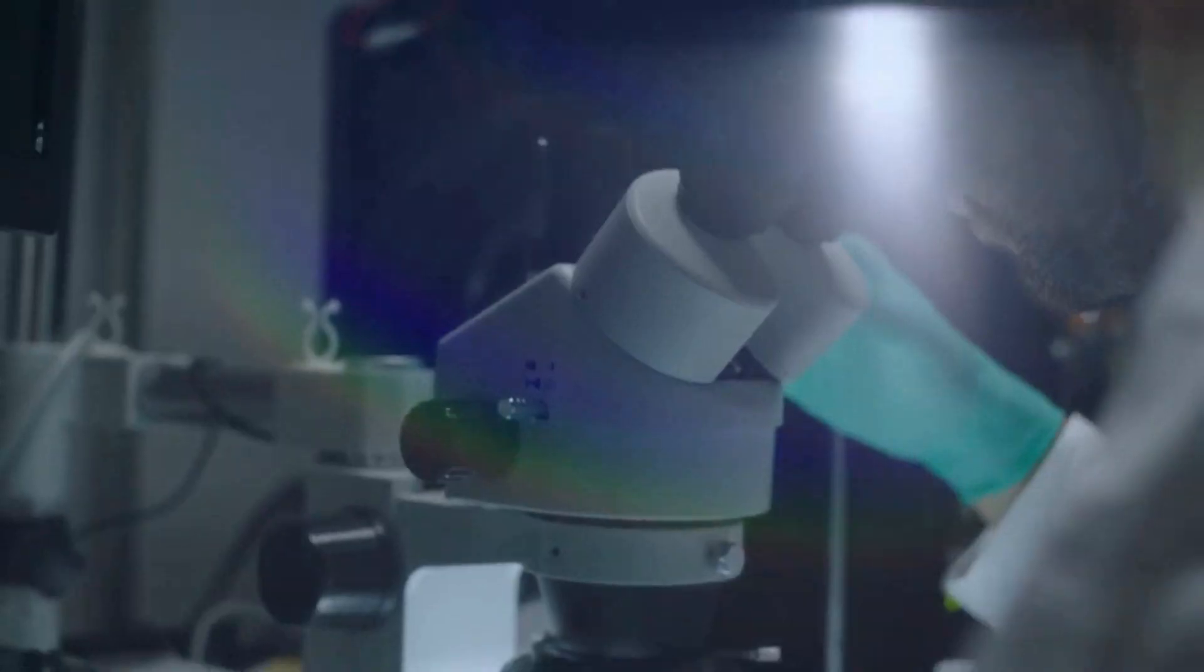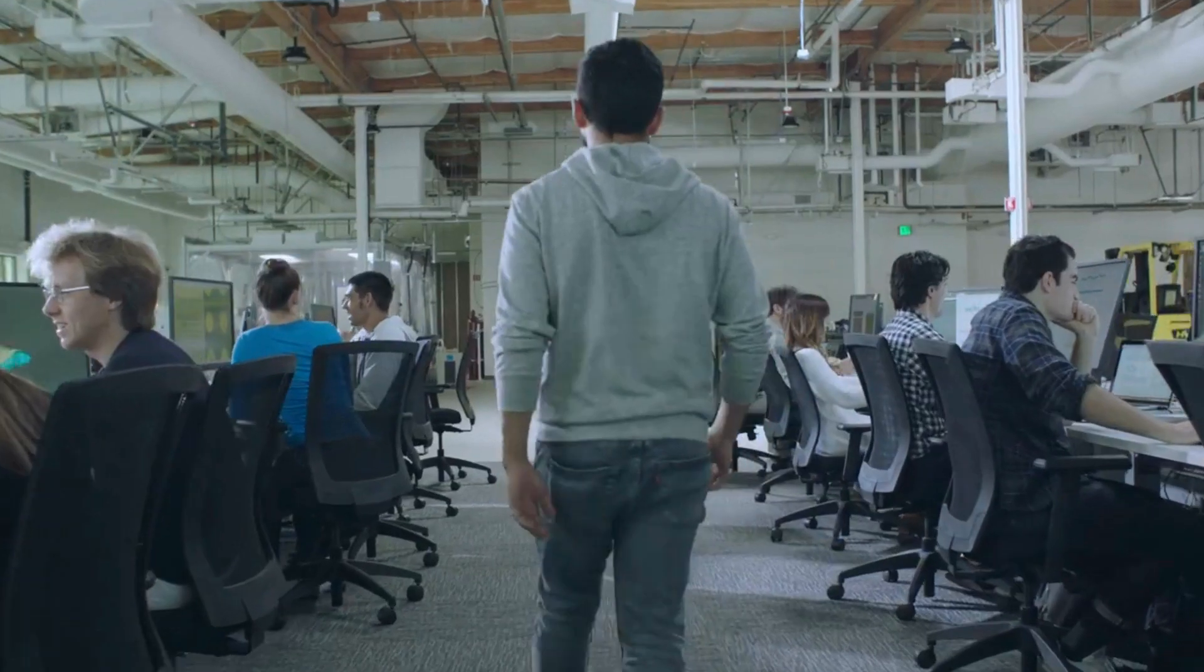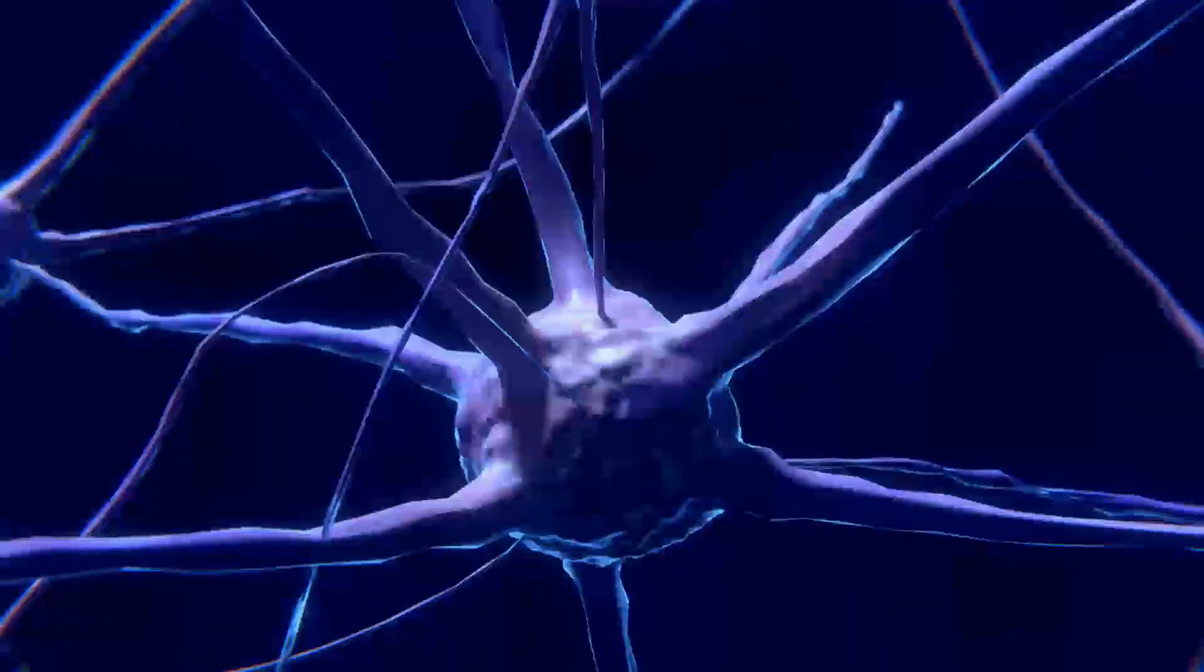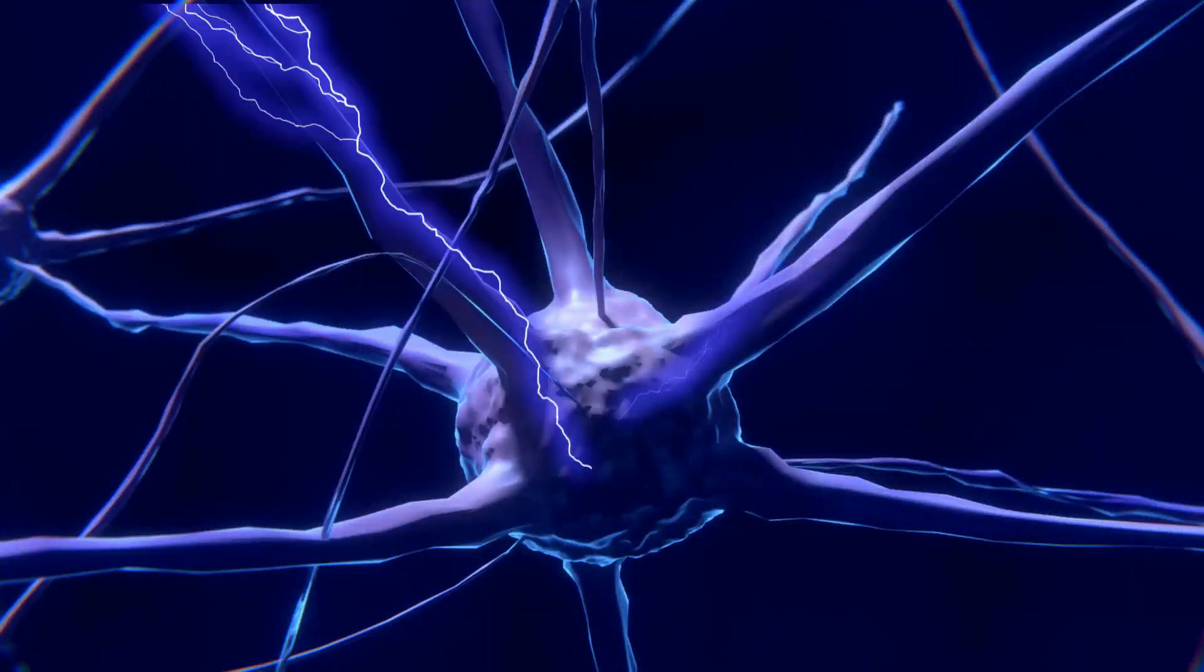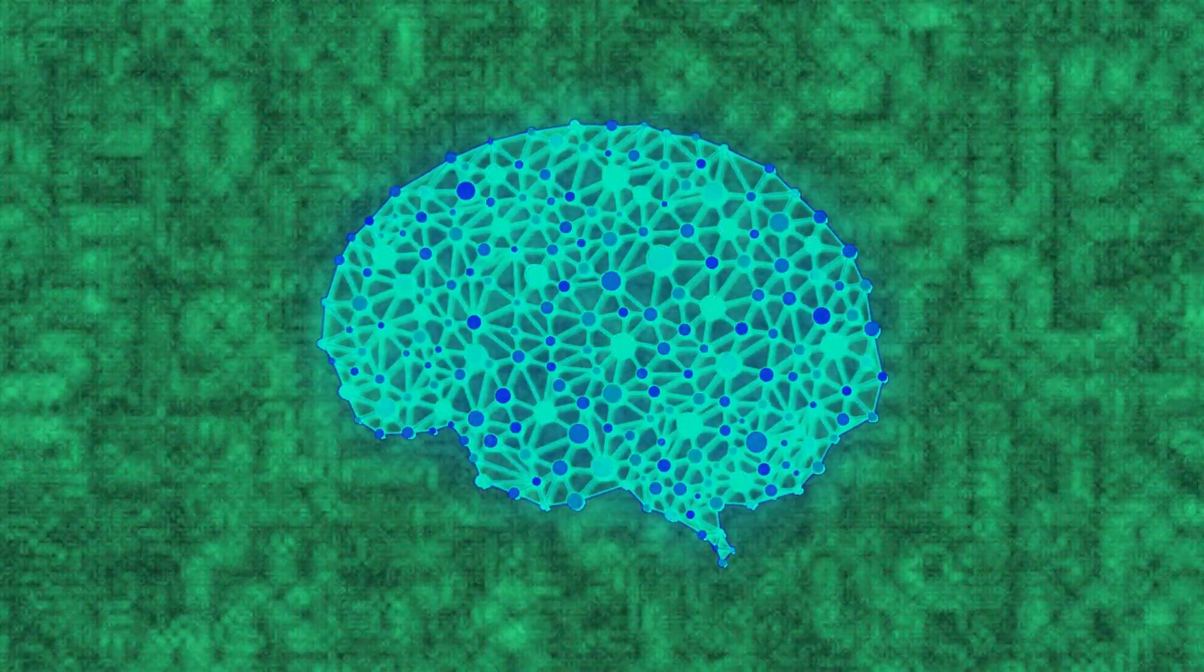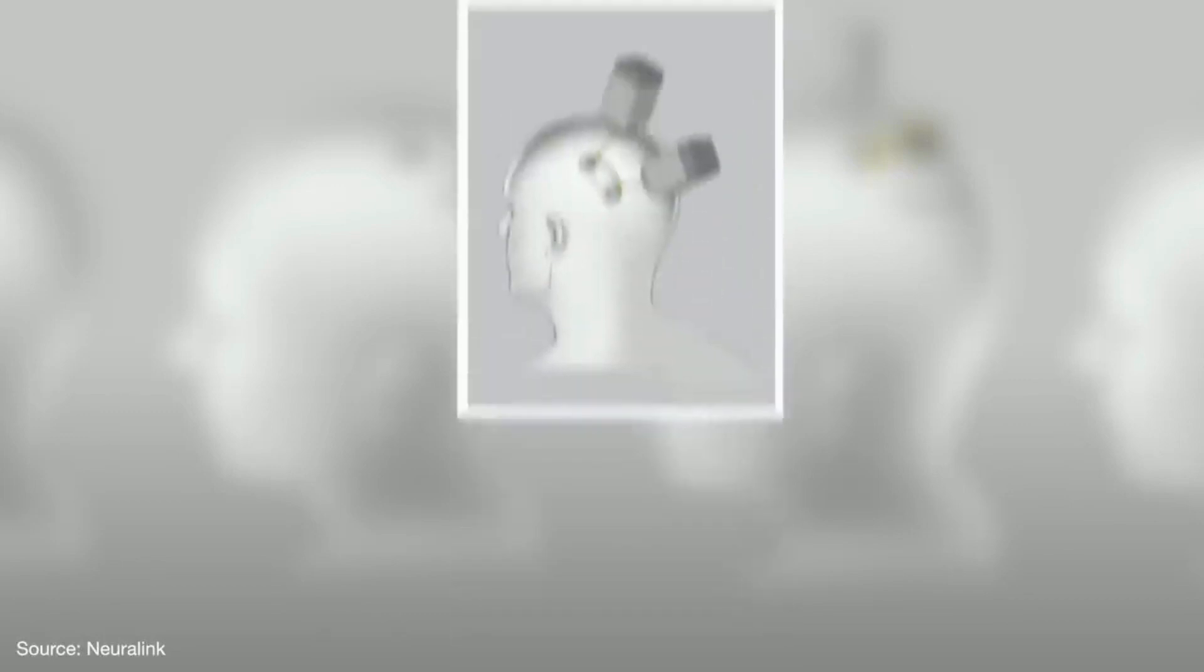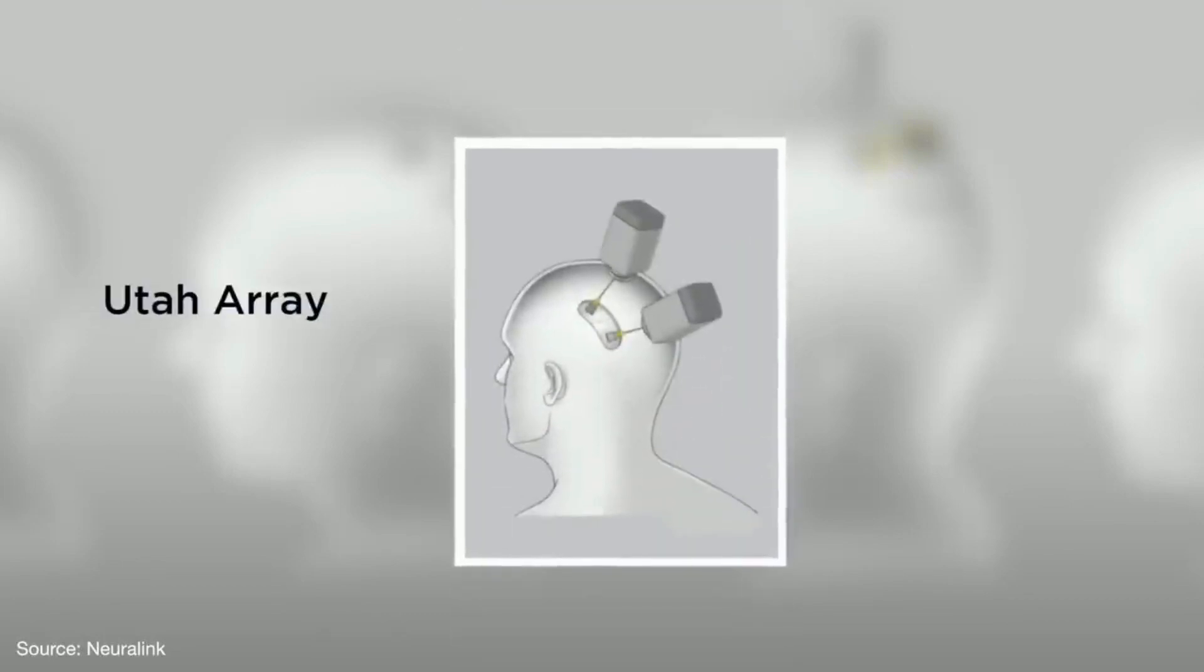In order to understand how Neuralink works, you must understand that your brain sends information to different parts of your body using neurons. These neurons in your brain connect with each other to form a large network and communicate using chemical signals. These are called neurotransmitters. The reaction generates an electric field and you can record these reactions by placing electrodes nearby.